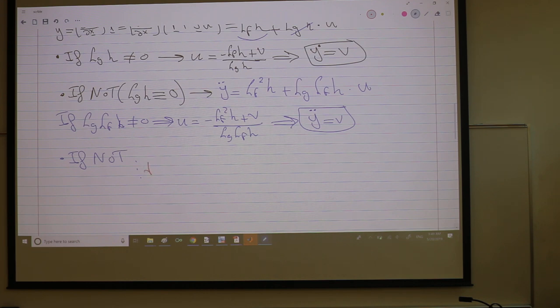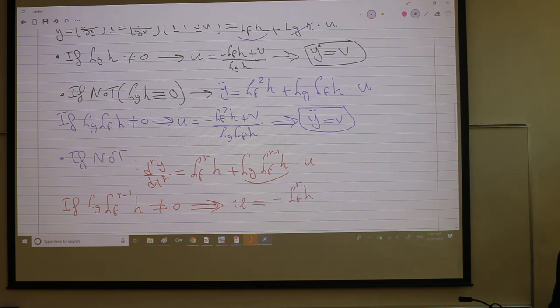So this is d^r y by dt^r is L_f^r h plus L_g L_f^(r-1) h times u. And hopefully at some point you will get the coefficient of u is not zero. So if L_g L_f^(r-1) h is non-zero, I can choose u to cancel the non-linear dynamics.